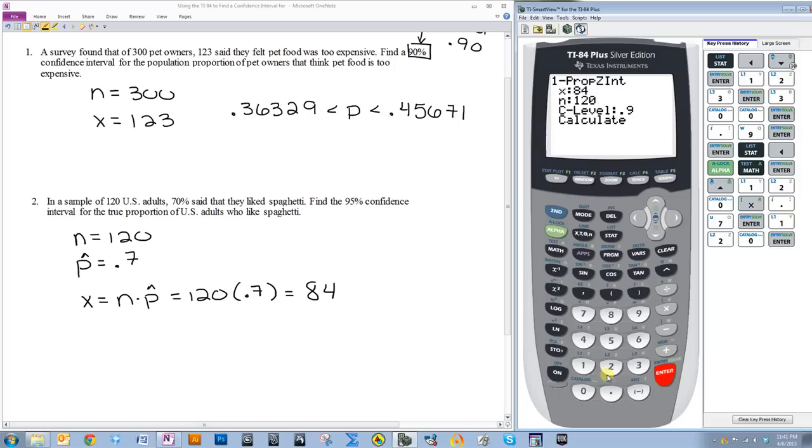Then we do N of 120. C level this time is 0.95. And then calculate press enter.